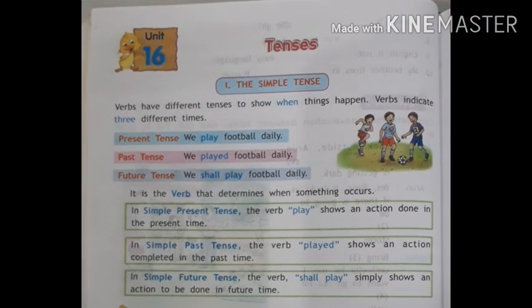See page number 84 in the book or see in this slide. The first one: the simple tense. Verbs have different tenses to show when things happen. Verbs indicate three different times. First, present tense: 'we play football daily' — play shows the present tense. Second, past tense: 'we played football daily' — its -ed form shows the past tense. Future tense: 'we shall play football daily' — it shows the future tense. It is the verb that determines when something occurs.